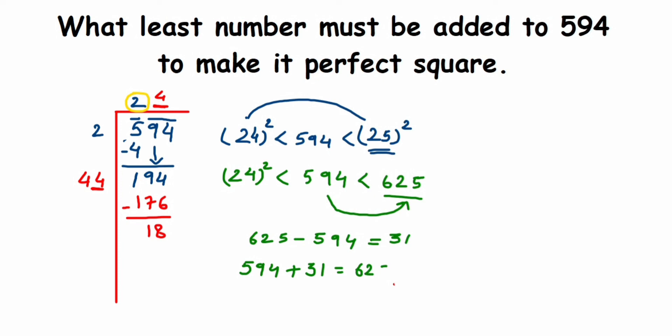And 625 is a perfect square. So therefore, what is the least number to be added? That will be 31. So therefore, 31 is the least number to be added.